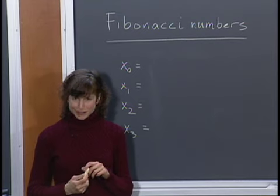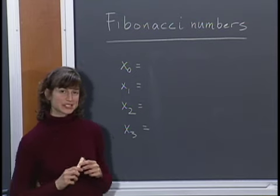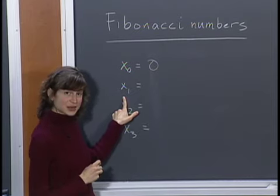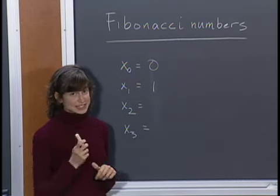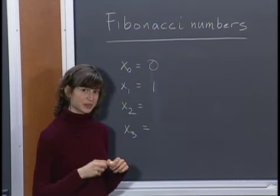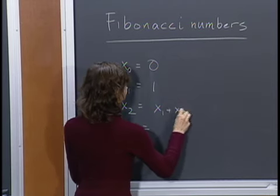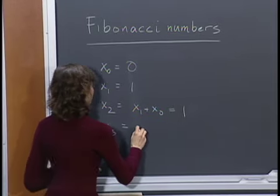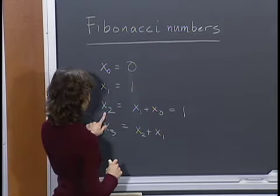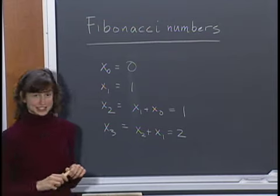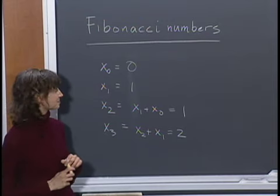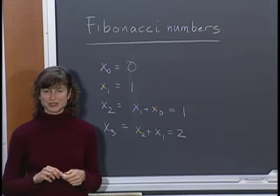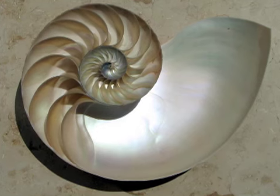Now let's change direction a little bit. Have you ever heard of the Fibonacci numbers? The Fibonacci numbers are a sequence defined by a simple rule. The first Fibonacci number, x0, is defined to be 0. The second, x1, is defined to be 1. The rest of the Fibonacci numbers are defined as the sum of the previous two: x2 = x1 + x0 = 1, x3 = x2 + x1 = 2, and so on. The Fibonacci numbers have interested mathematicians for over a thousand years, both for their mathematical properties and because they arise in natural patterns like the golden spirals found in Nautilus shells and galaxies.